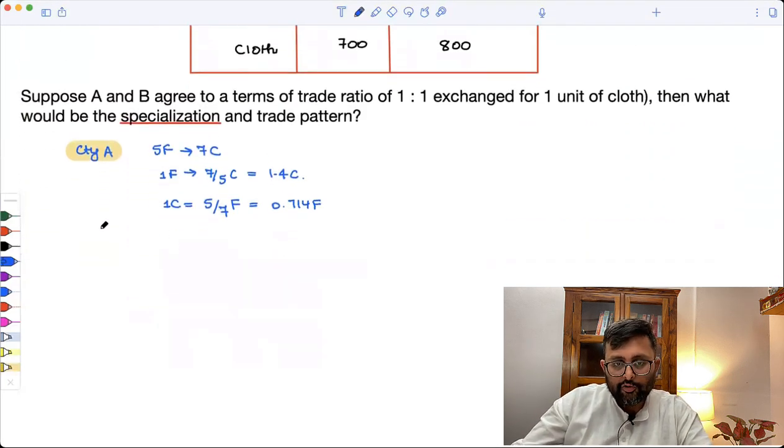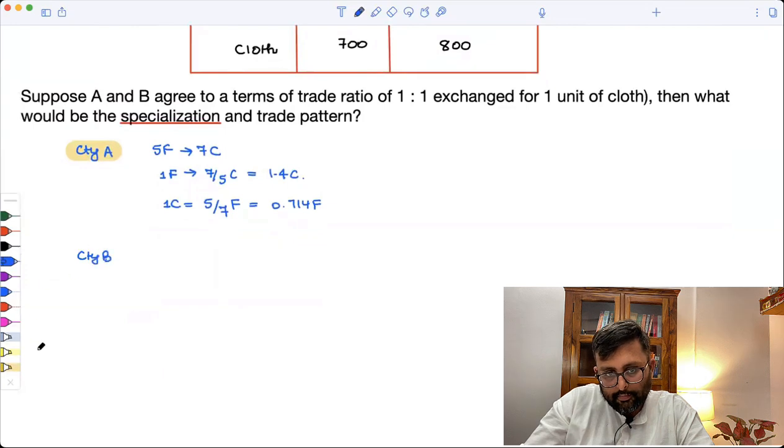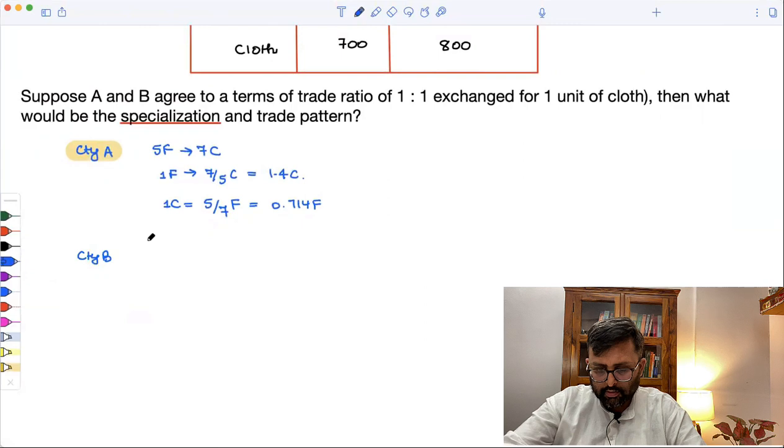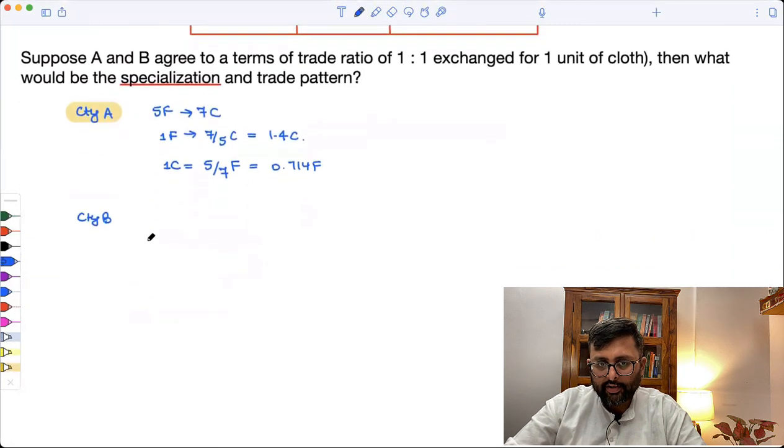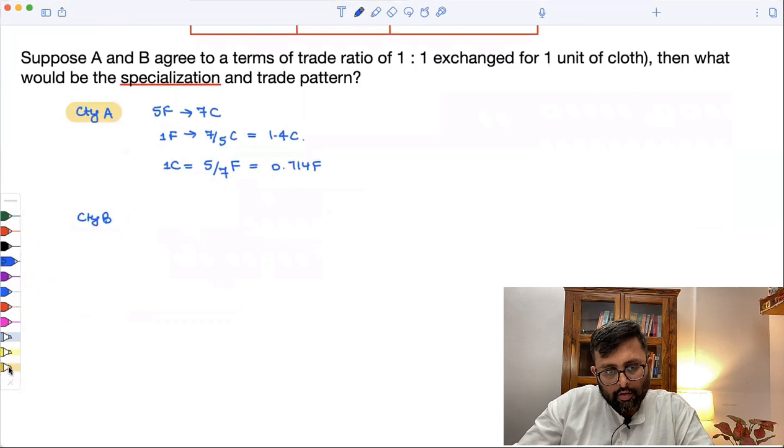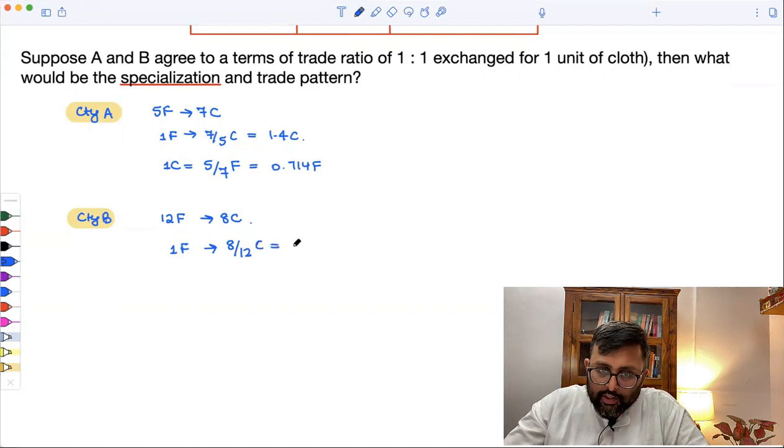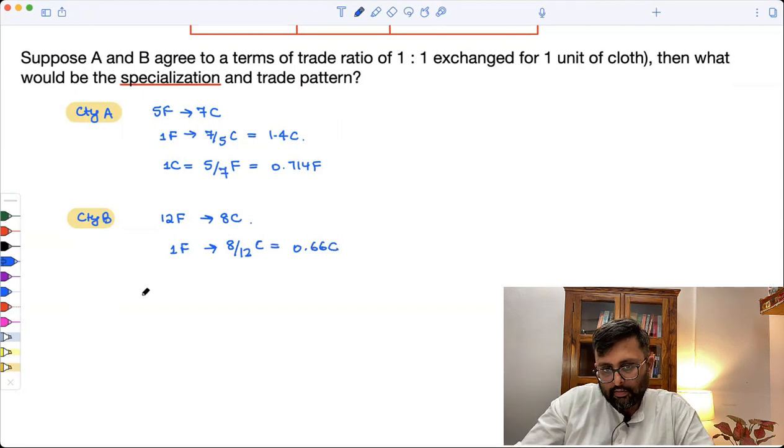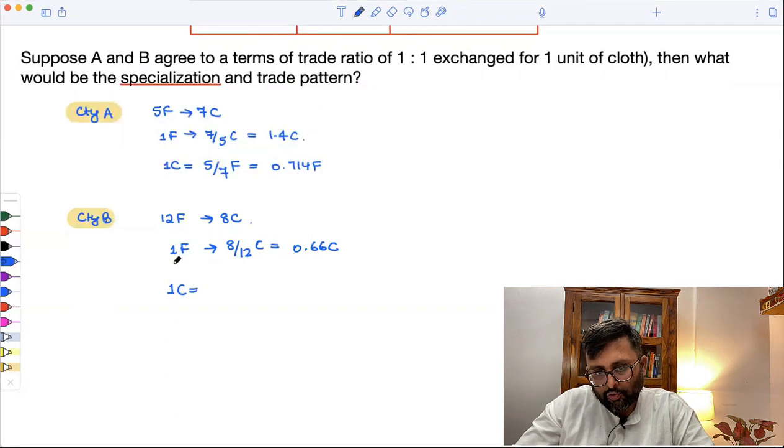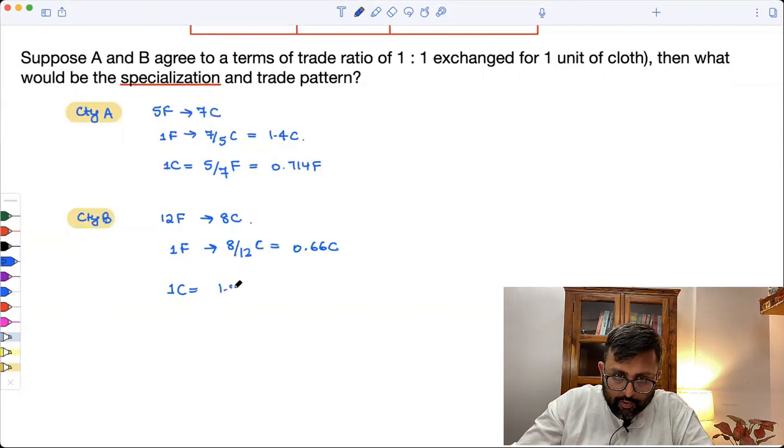So for country B, it was 1200 food and 800 cloth. So 1F would mean 8 upon 12C, that comes out to be 0.66C. So 1C is equal to 1 upon 0.66, that comes out to be 1.5F.